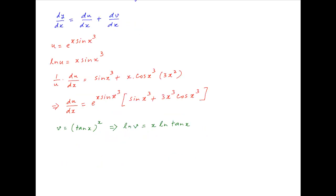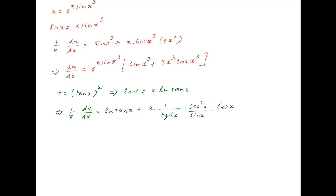Taking the derivative of both sides with respect to x, we get 1 upon v times dv upon dx is equal to ln of tan x times the derivative of x, which is 1, plus x times the derivative of ln of tan x, which is 1 upon tan x times sec squared x. Tan x can be replaced with sin x upon cos x.